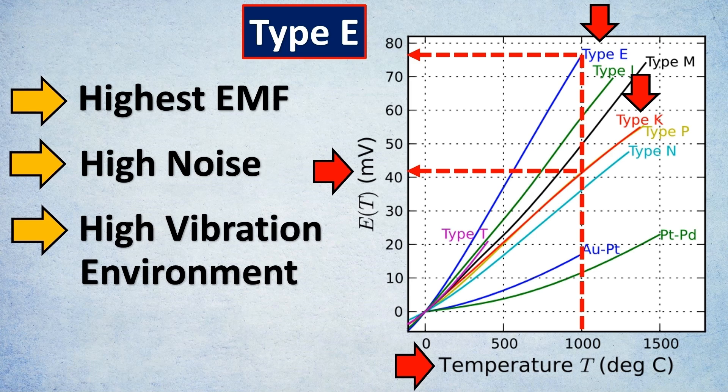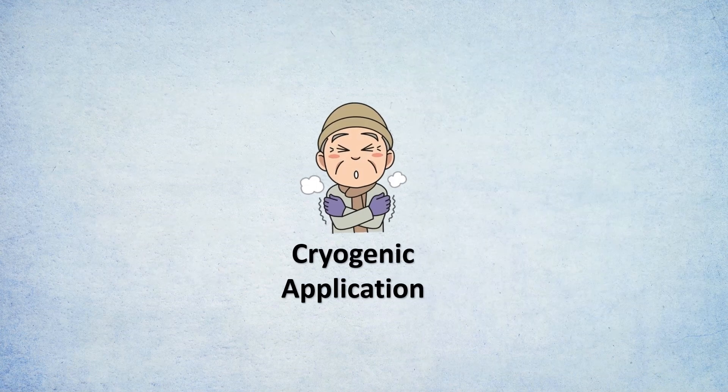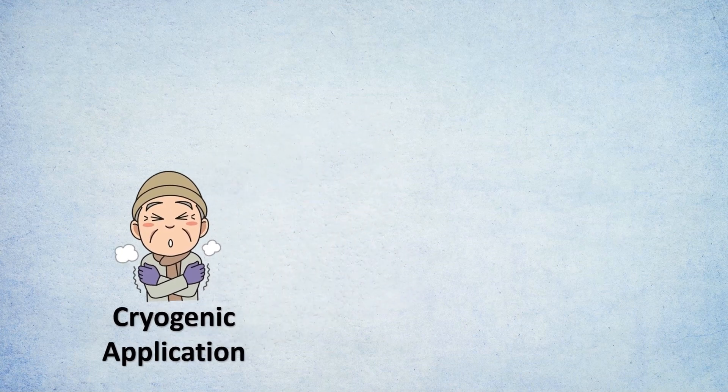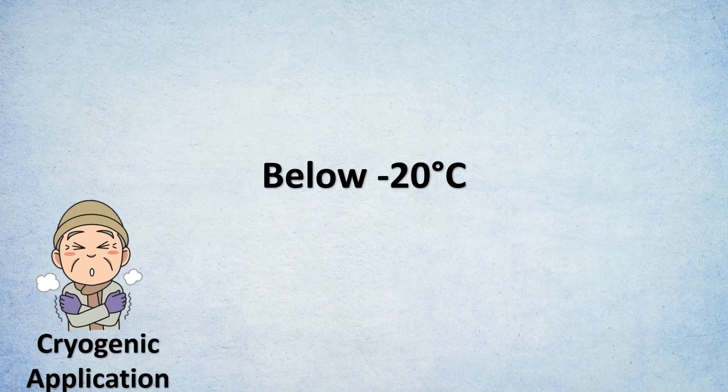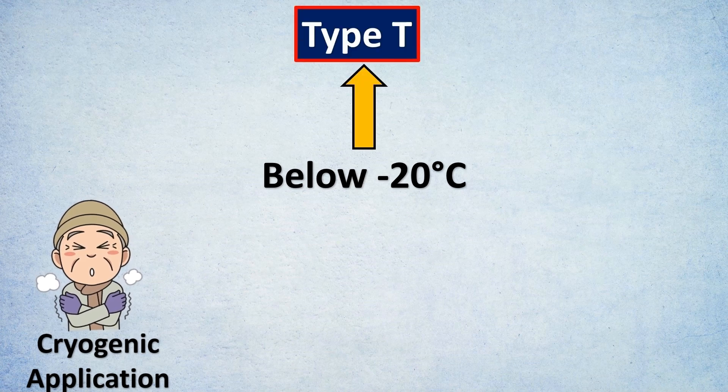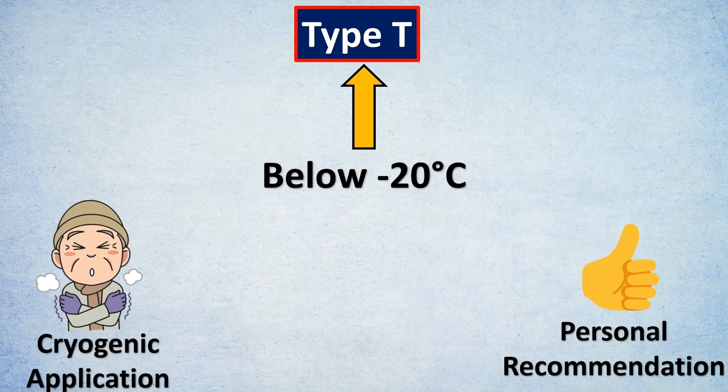In cryogenic applications, temperatures go down to maybe minus 186°C, especially with liquid nitrogen or LPG. For those cases, Type T might be a preferred choice. This is my personal recommendation based on input from various site people in terms of stability and design basis.